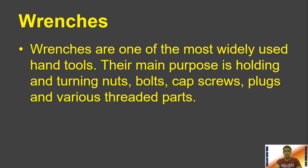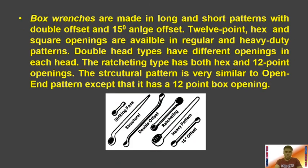Next we have wrenches — one of the most widely used hand tools. Their main purpose is holding and turning nuts, bolts, cups, screws, plugs, and various threaded parts. The first type is the box wrench, made in long and short patterns with double offset and 15-degree angle offset. They have 12-point hex and square openings available in regular and heavy duty patterns. Double head types have different openings in each head, and the ratcheting type has both hex and 12-point openings, allowing you to tighten without removing the wrench from the bolt.